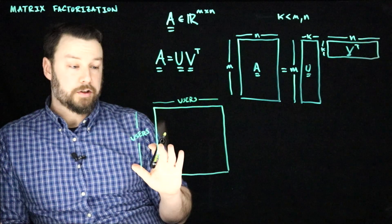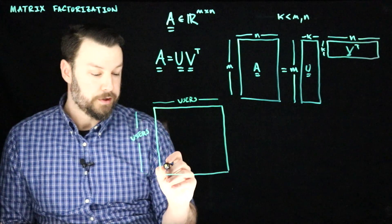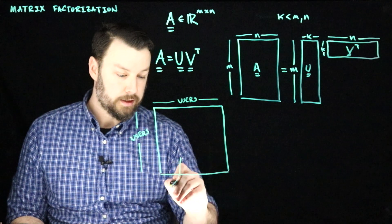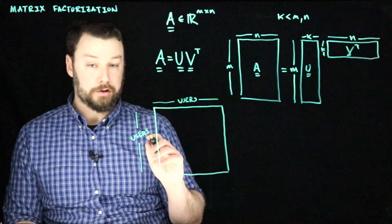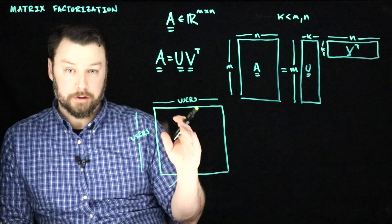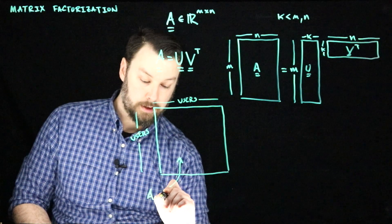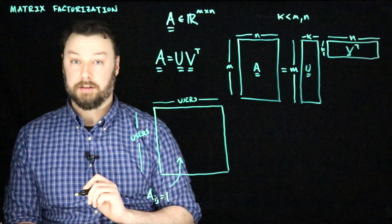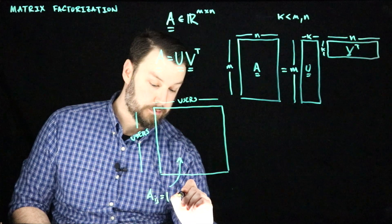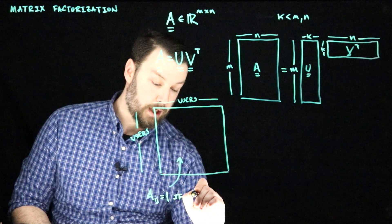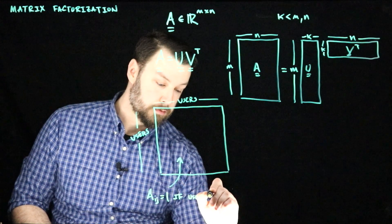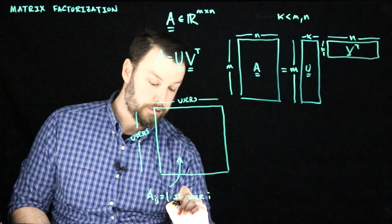So now we might have something a little bit different. Maybe it's a square matrix that's users by users. But here we're going to do something a little bit different. What we're going to do is put an entry in here whenever user i follows user j. So aij is 1 if user i follows user j.